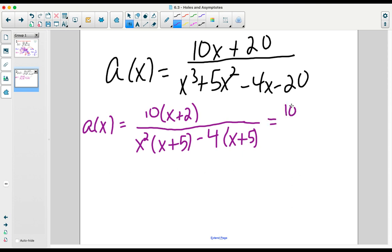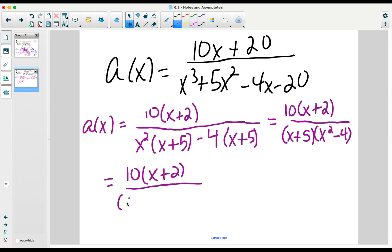Continuing the factorization, we have 10 times x plus 2, common binomial of x plus 5, leftover terms of x squared minus 4. And despite the fact that we think we might be finished, we are not, because of the role that difference of squares plays in our factoring. We can take one more step and finish it with an x minus 2, x plus 2.